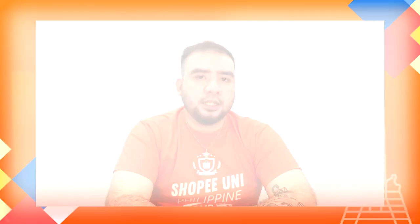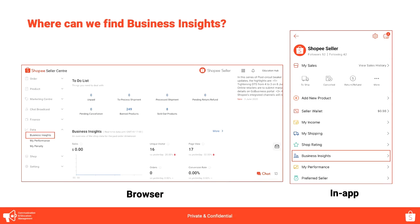So where can you find Business Insights? It is actually in your Seller Center. You can take a look at it in the app or on the desktop version. For this one, I suggest that you use the desktop version. It's in Data — just click on Business Insights.